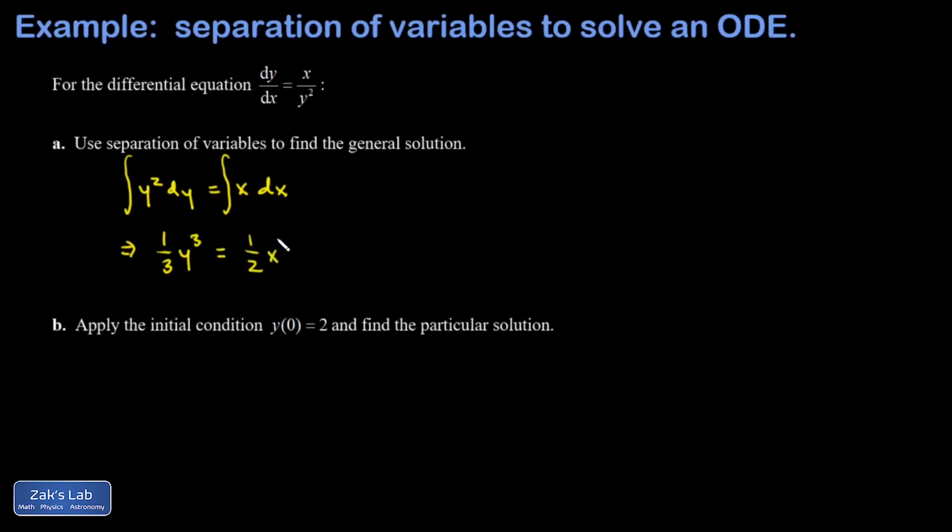On the right-hand side, one-half x squared. Each of these integrals produces an arbitrary constant, but when you combine those it's just one arbitrary constant. Ordinarily we're looking for an explicit form of y as a function of x, so I'm solving for y here. I multiply by three on both sides, and three times an arbitrary constant is just a new arbitrary constant, so I'll just write it as c.